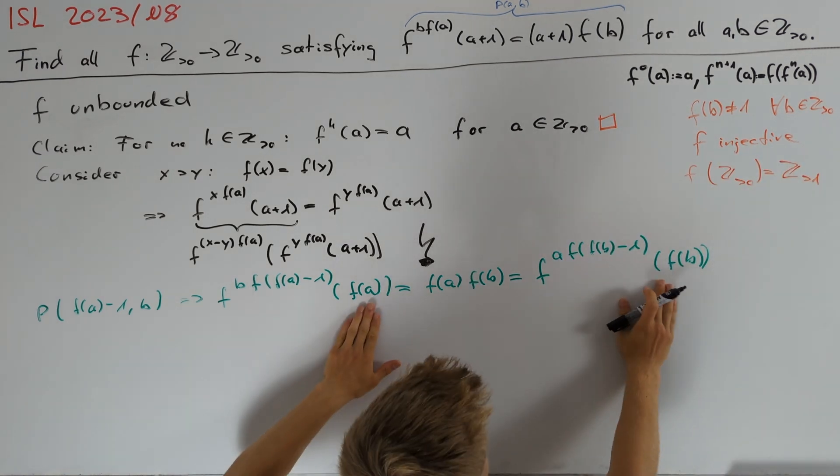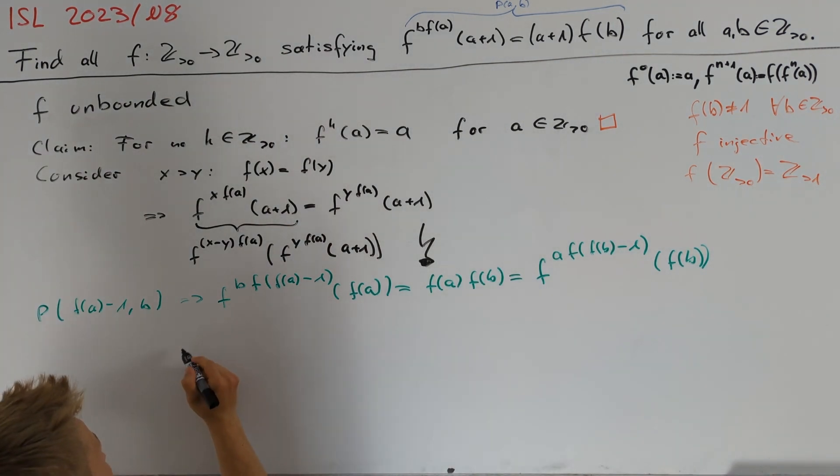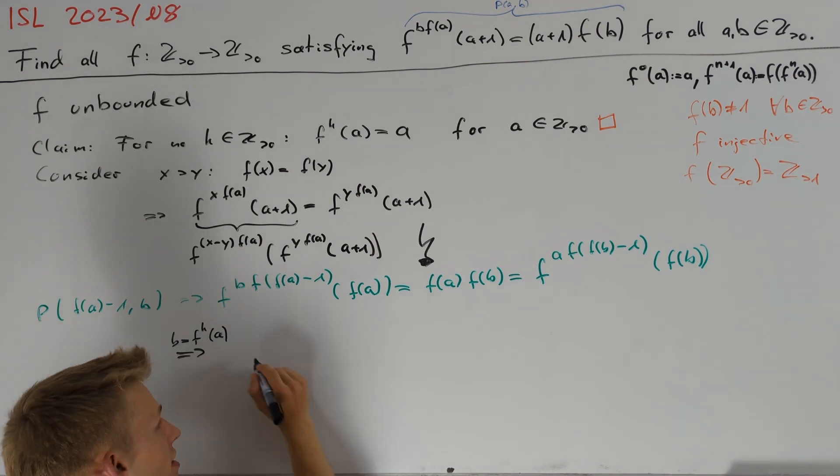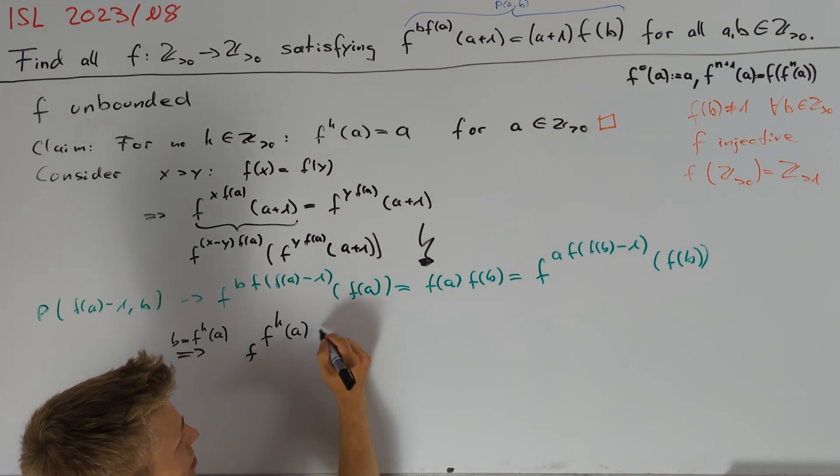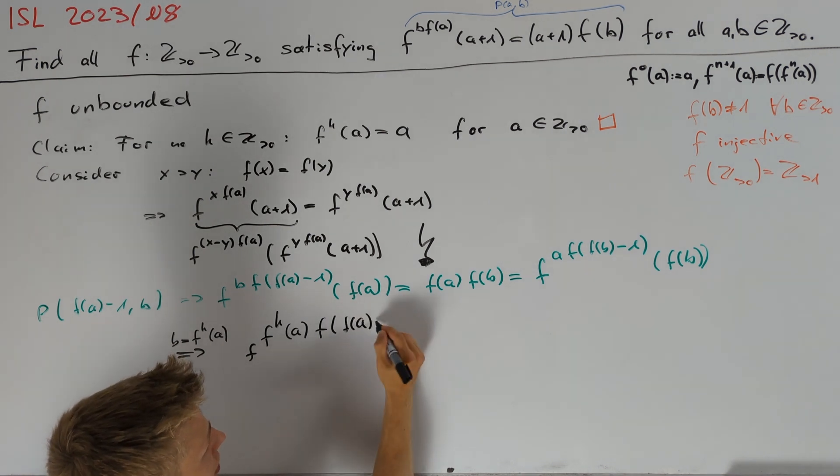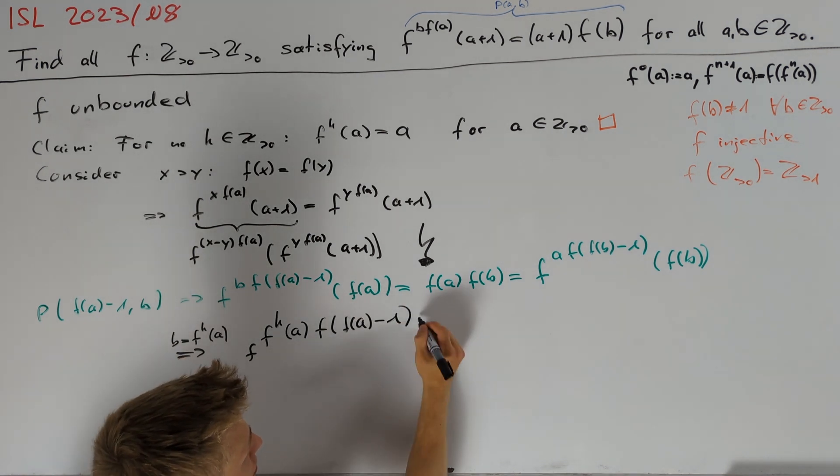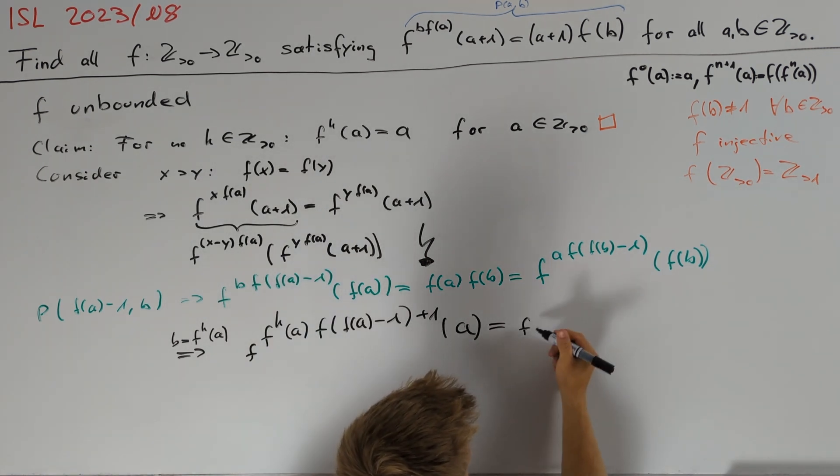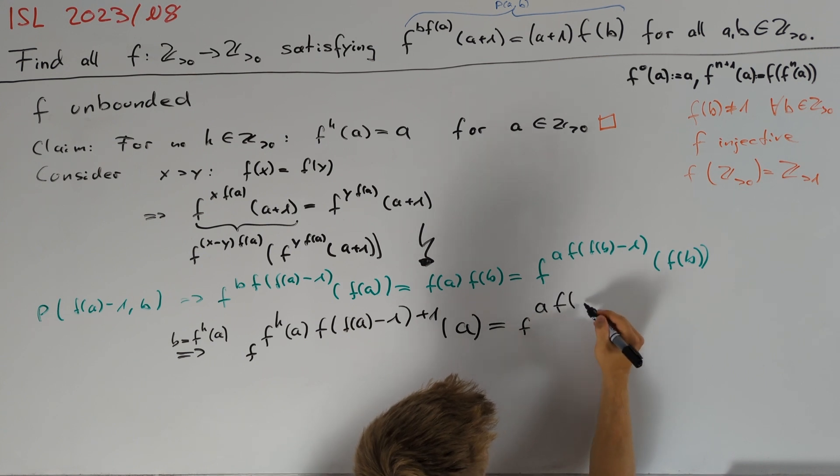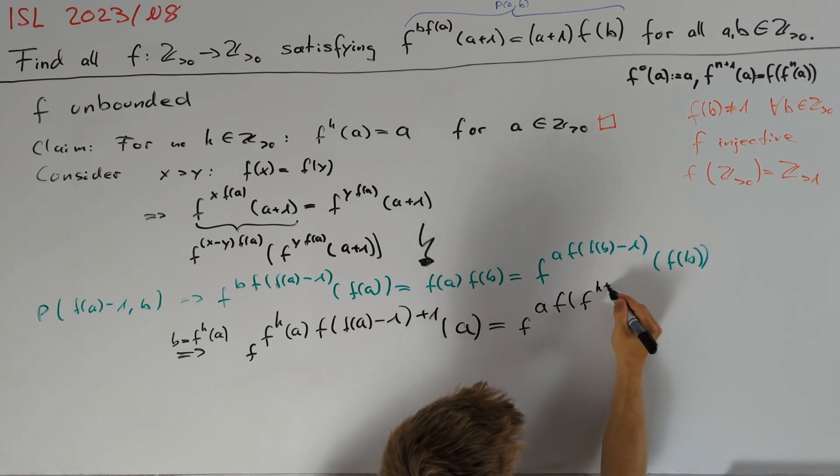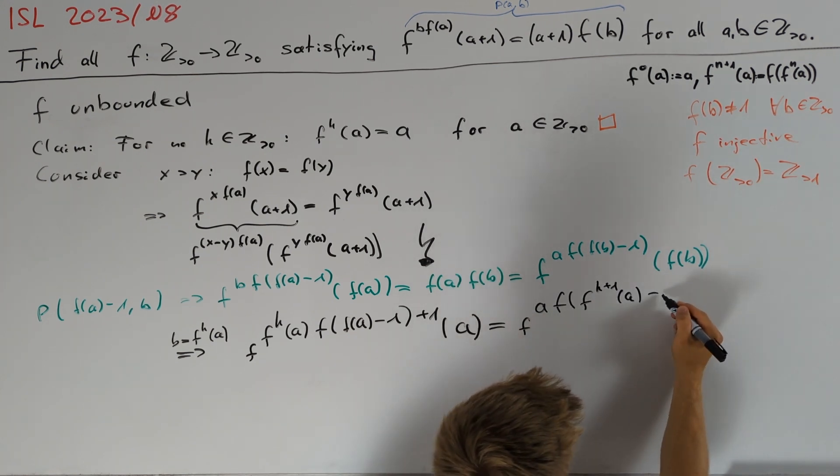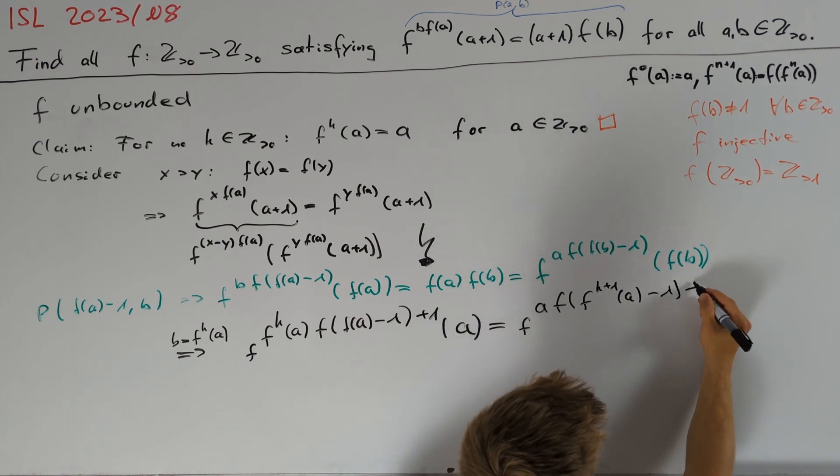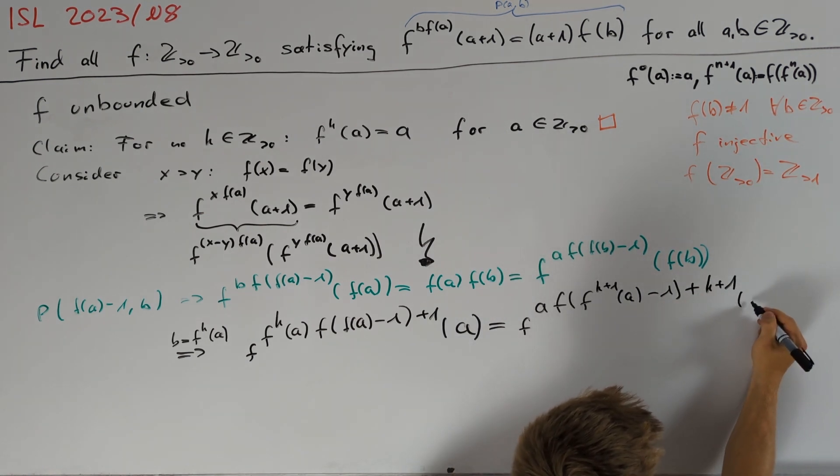Moreover, to get equal arguments on both sides, we can plug in b equal f^k(a), which yields f^(f^k(a)f(f(a)-1)+1)(a) = f^(af(f^(k+1)(a)-1)+k+1)(a).